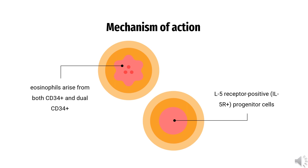IL-5 production is increased upon activation of Th2 lymphocytes after antigen exposure, and IL-5 stimulates the production and maturation of eosinophil precursors in the bone marrow. IL-5 promotes the growth and differentiation, recruitment, activation, and survival of eosinophils via interacting with the IL-5 receptor expressed on the eosinophil surface. Increased production and activation of eosinophils is especially prominent in allergic forms of asthma.